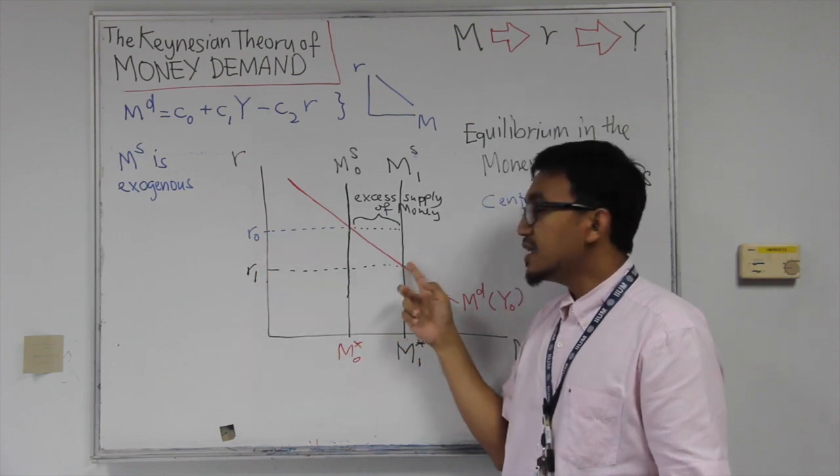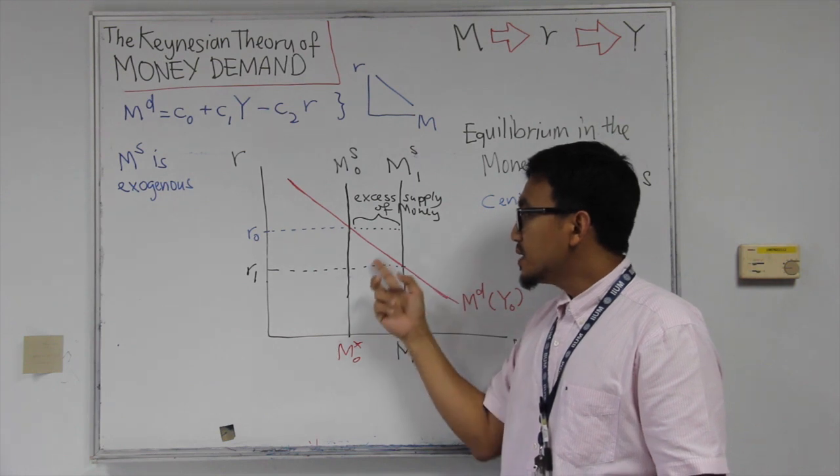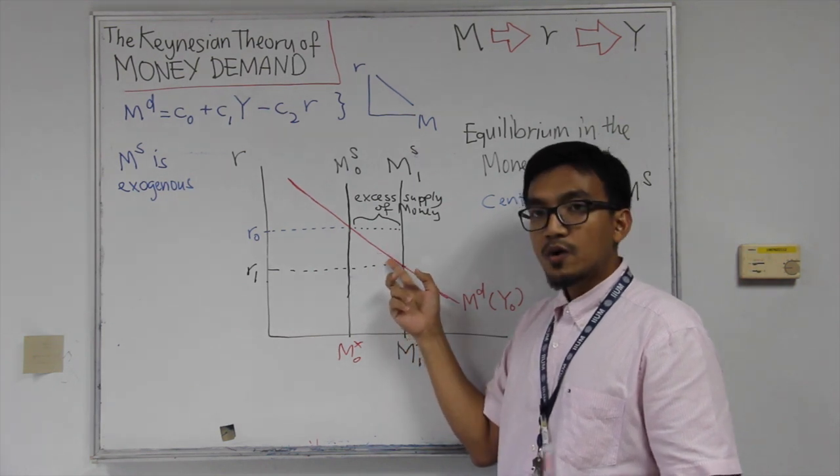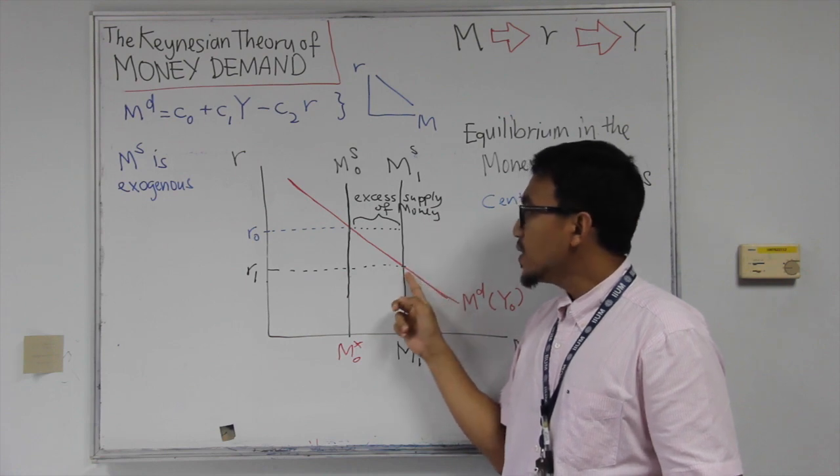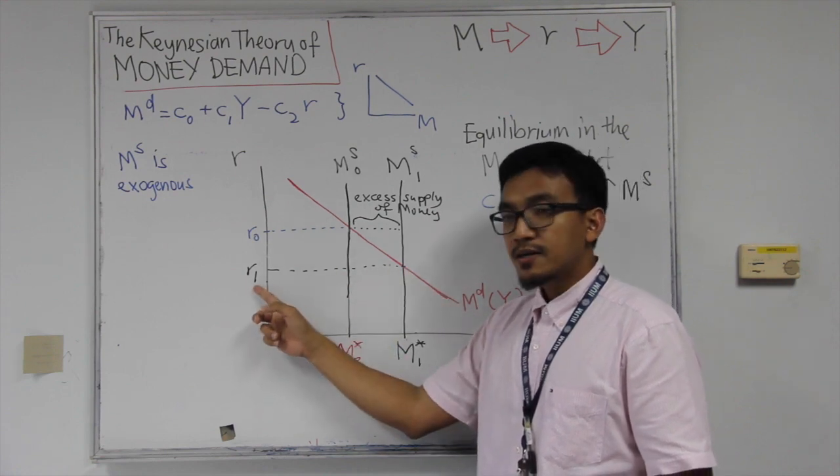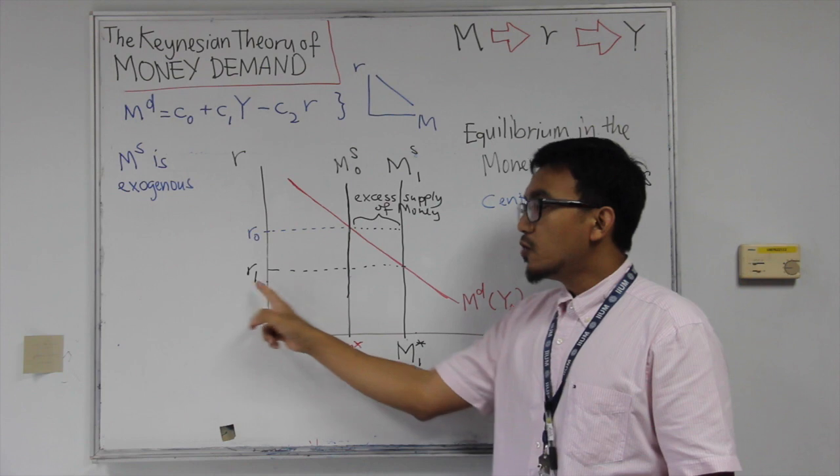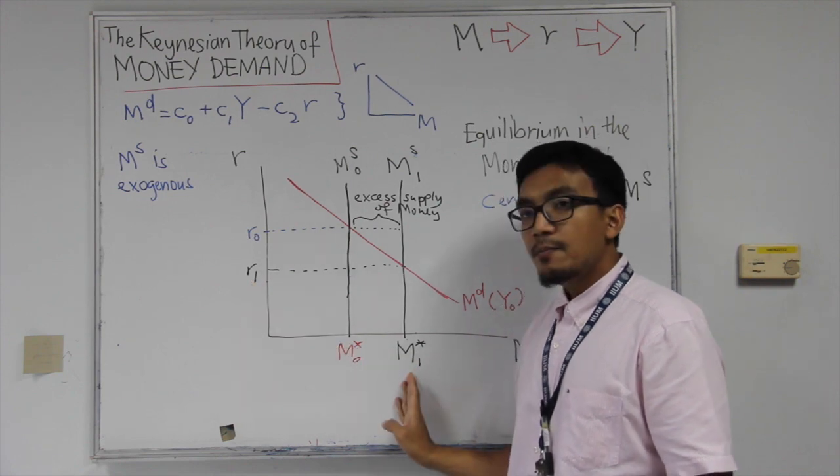So the demand for money now will go up. As we move to the right, more and more money being demanded. So we have a new equilibrium at R1 and M1 star. Lower interest rate, more money equilibrium.